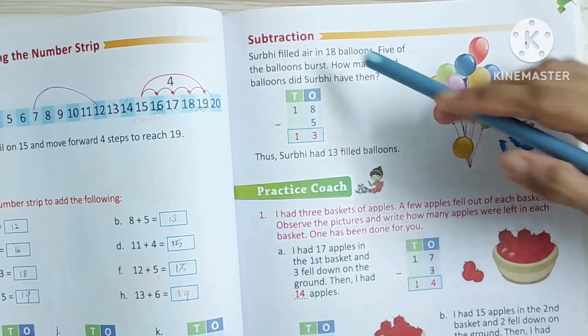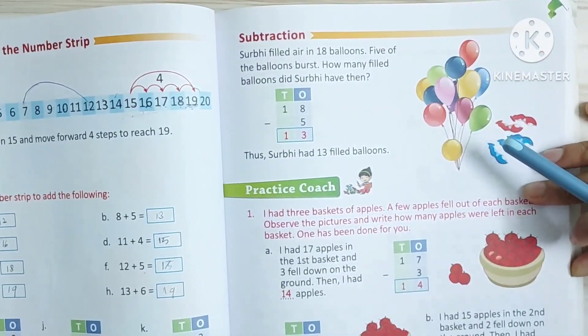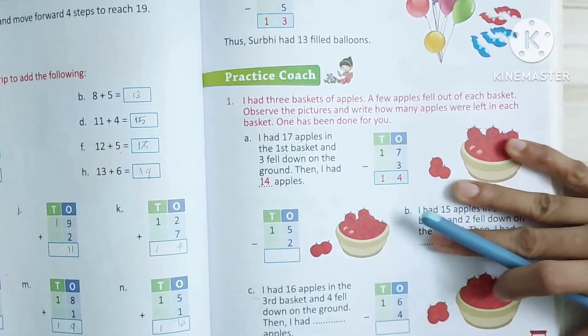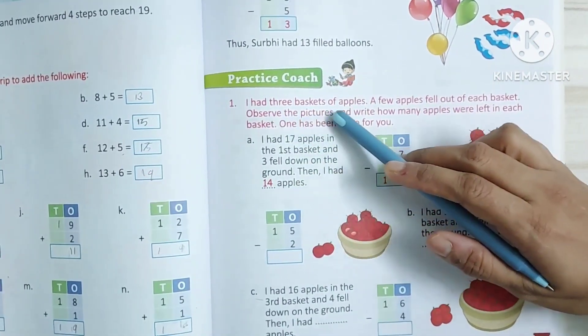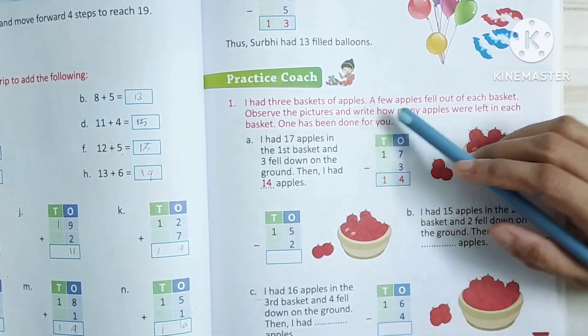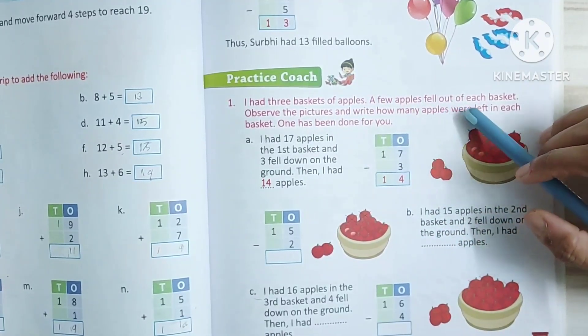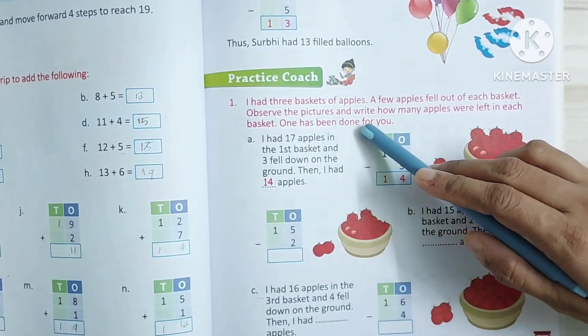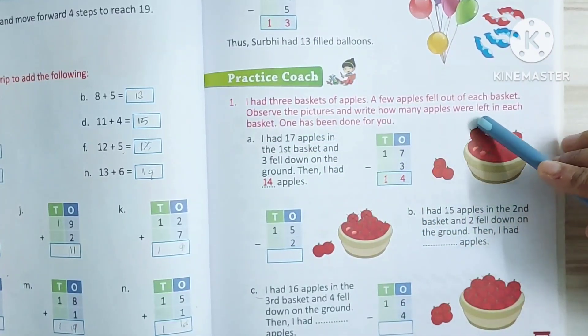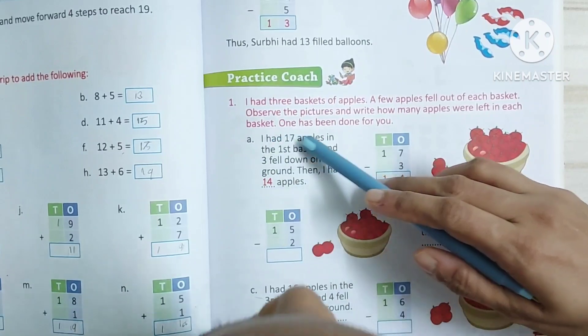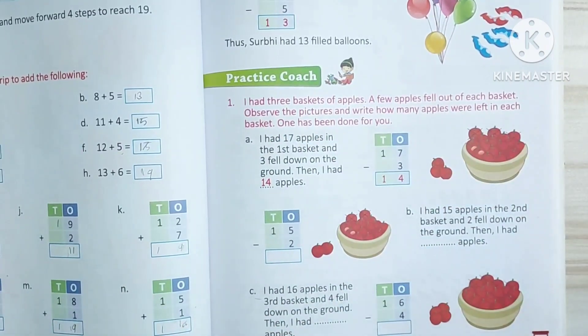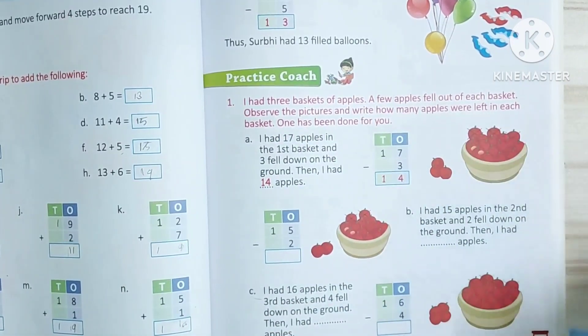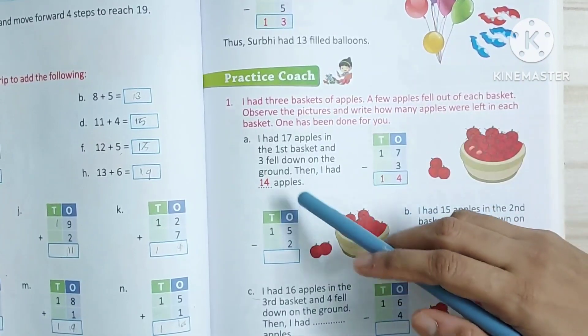Here, they gave one example how to do. Now we will see this. I had three baskets of apples. A few apples fell out of each basket. Observe the pictures and write how many apples were left in each basket. One has been done for you.